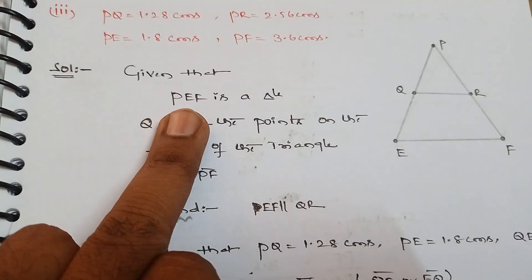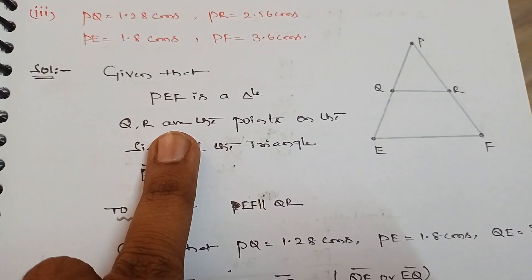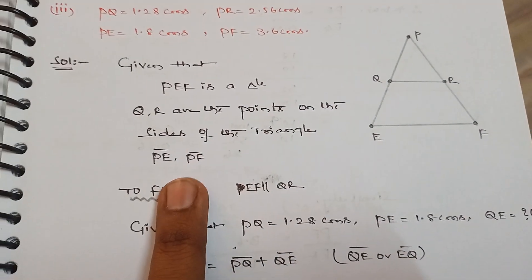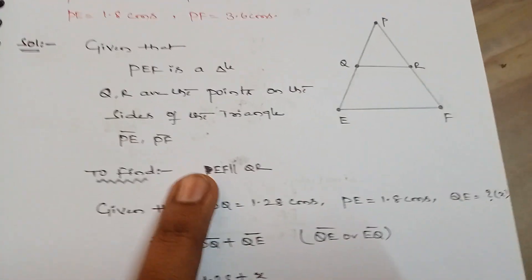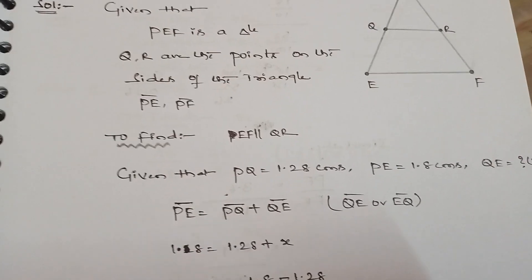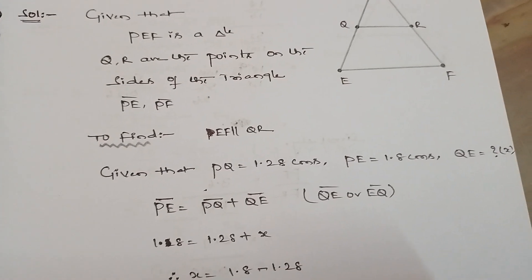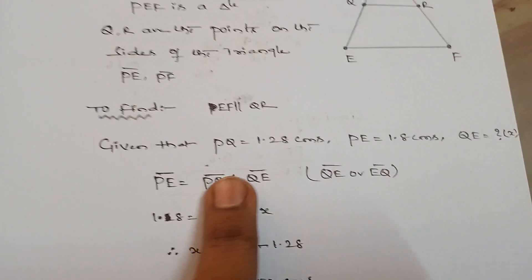Given that PEF is a triangle and Q and R are the points on the sides of the triangle PE, PF. Okay, now we need to find if EF is parallel to QR. Take down the given values.